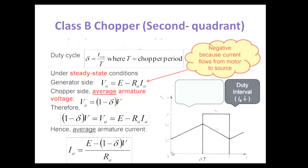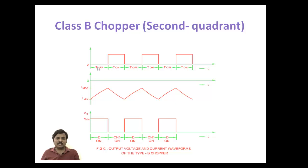Looking at the waveforms: from 0 to the on-period (delta·T), the chopper is on, and the inductor and armature current starts increasing. When the chopper is off, the current decreases in the reverse mode and the switch turns on again. The first period is called the energy storage interval and the next period is called the duty interval. The current value is always negative because it acts as a motor. When T is off, the current decreases on the reverse side; when T is on, the inductor releases energy and current decreases again.